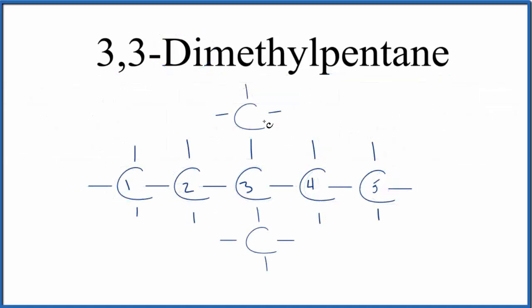So this is the structural formula here for 3,3-dimethylpentane. We have our pentane, five carbons, single bonds, and then we have two methyl groups on the third carbon here.